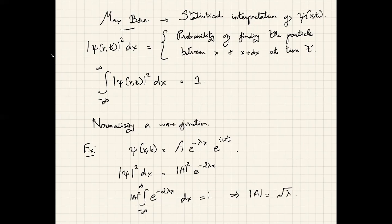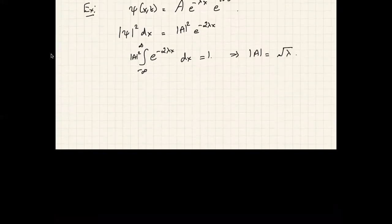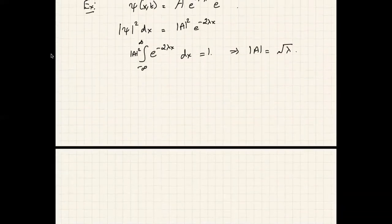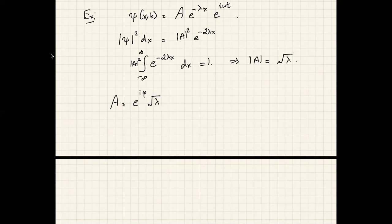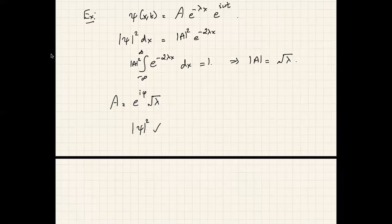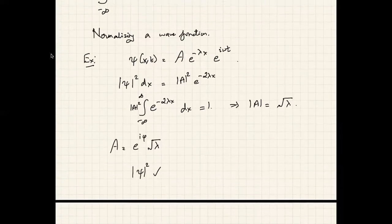Notice that this only gives you the modulus of A. A can still be a complex number since wave functions are in general complex. You can choose A to be completely real, like √λ, or something like e^(iφ)√λ. We will later find out that in the calculation of all relevant physical parameters it is |ψ|² that matters, not ψ itself. These overall phases become important only when looking at interferences; otherwise you can safely choose A to be real.